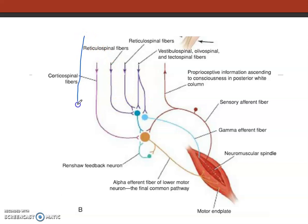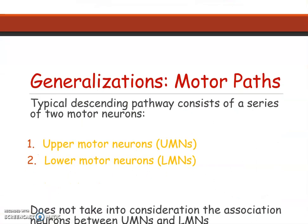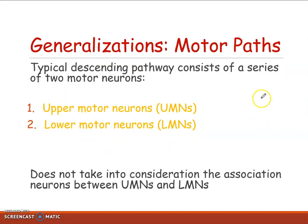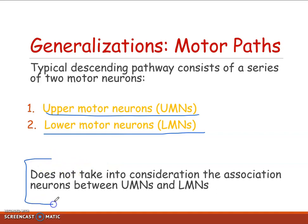These are the tracts coming down, and this is the final common pathway, and this is the muscle on which the motor neuron will act. In the generalization of motor parts, there are upper motor neurons and lower motor neurons, and this generalization does not take into consideration the association neurons between them. The association neurons are those neurons which interconnect these two.